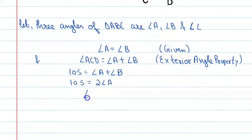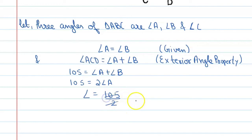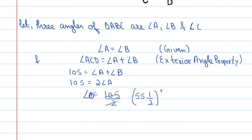Angle A is equal to 105 divided by 2. Angle A is equal to 52.5 degrees. Or you can also say that angle B is equal to 52.5 degrees.